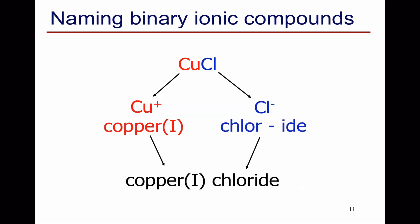So here's an example. CuCl. We know it must be Cl-, so it must be copper+. Copper+ is copper(I). And the chlorine is chloride, and the whole name is copper(I) chloride.